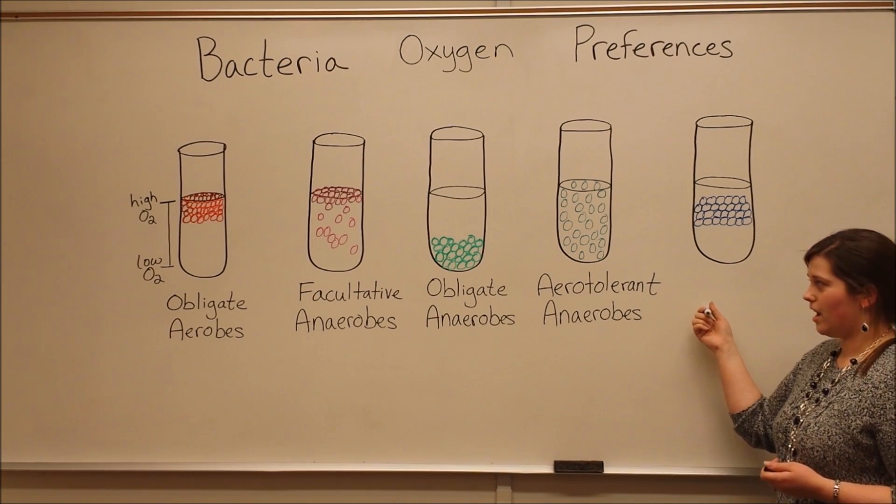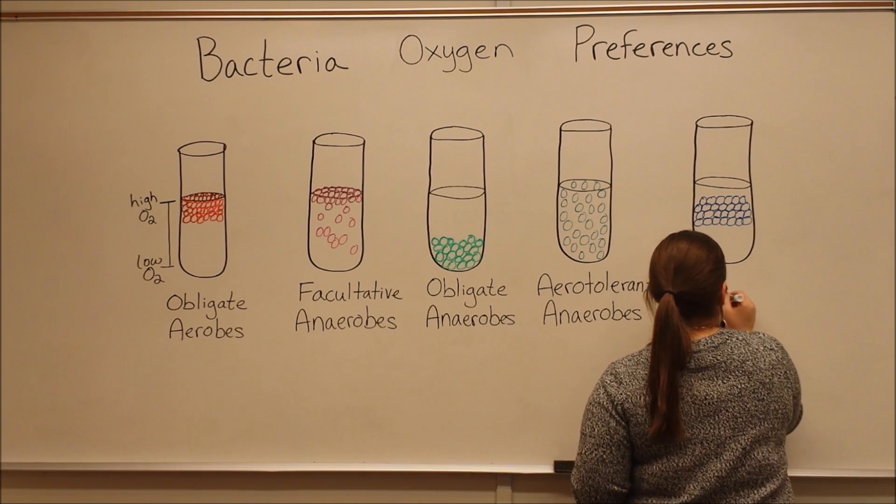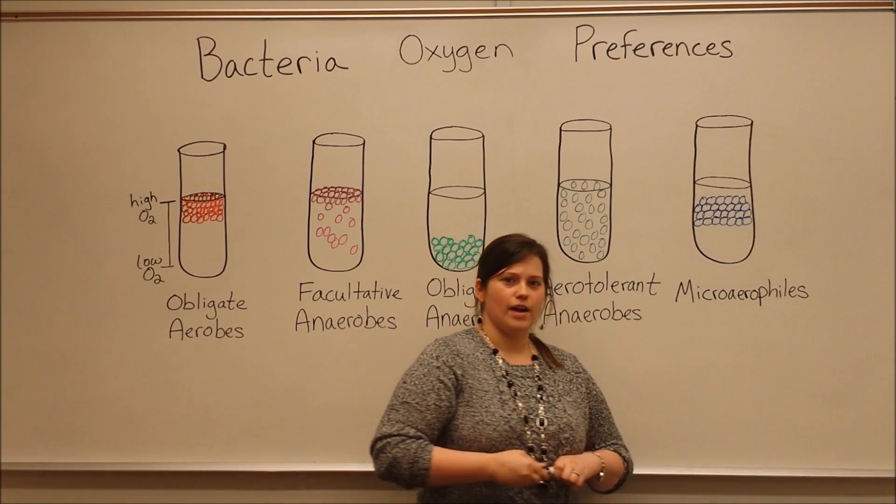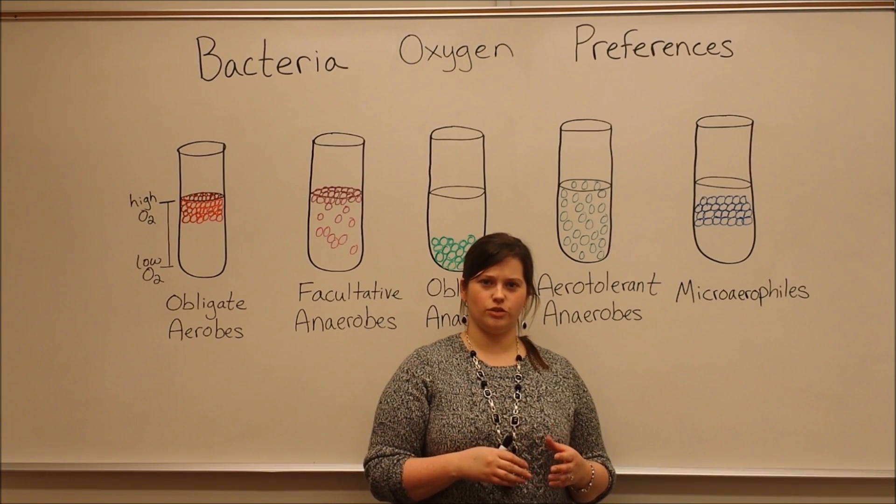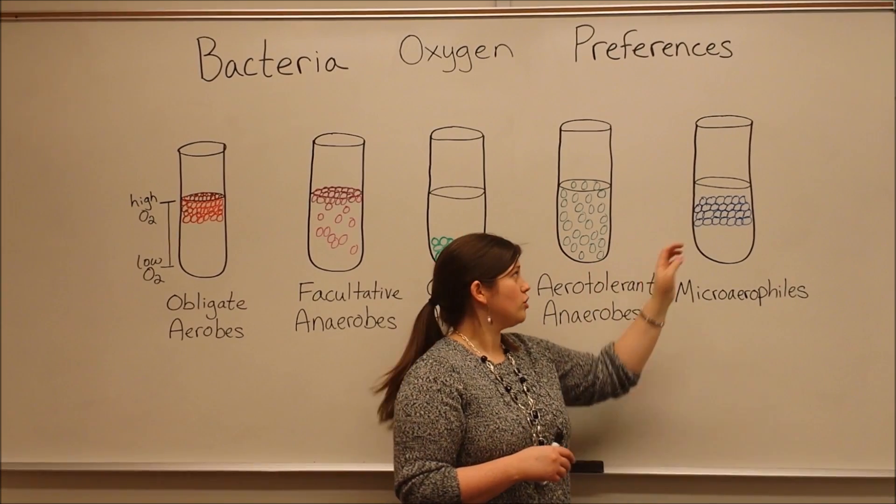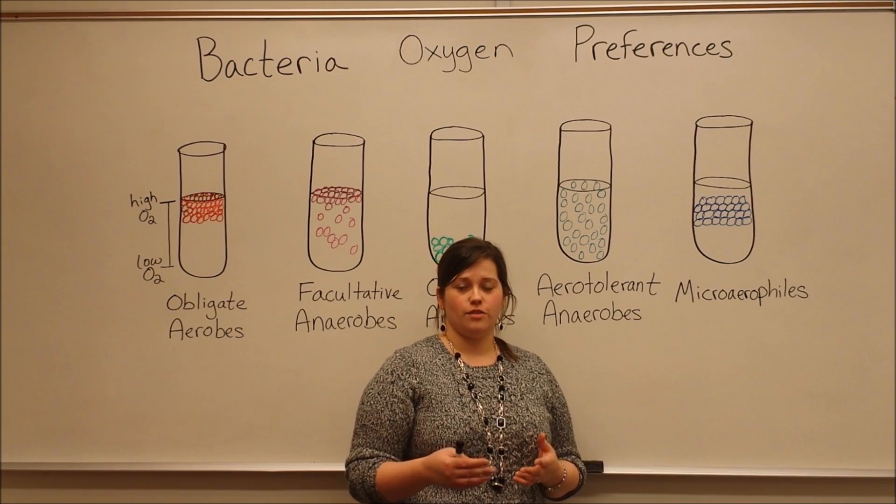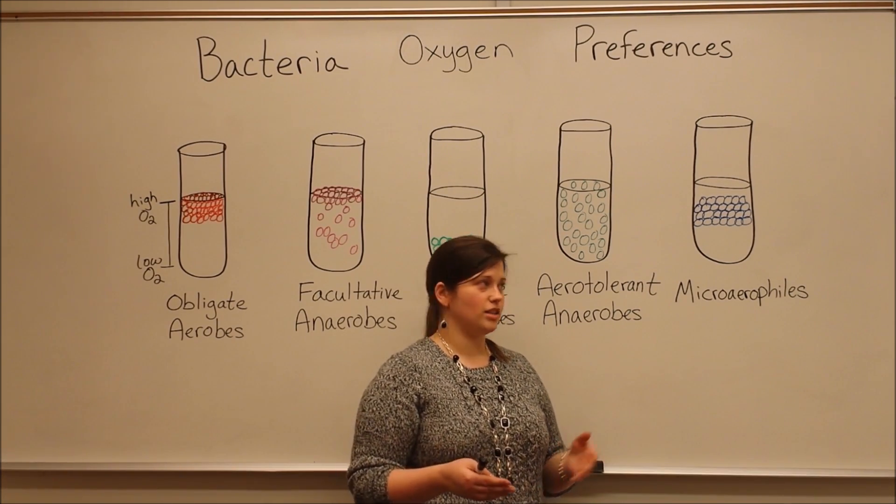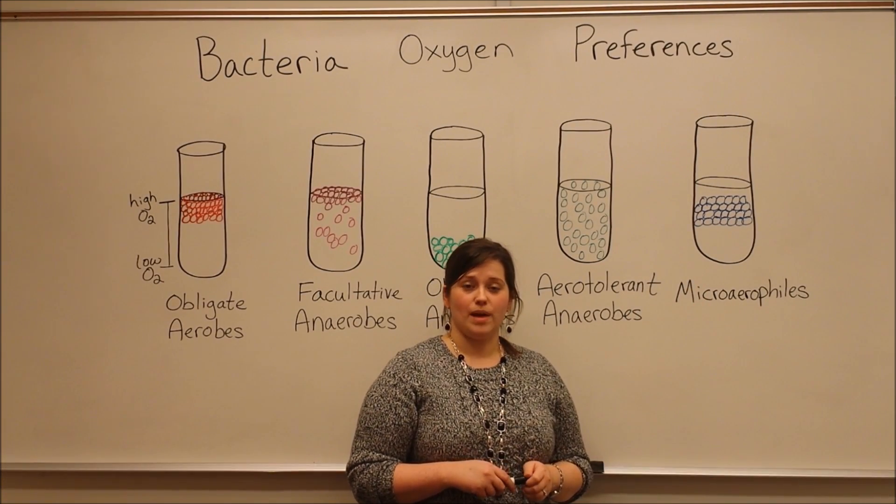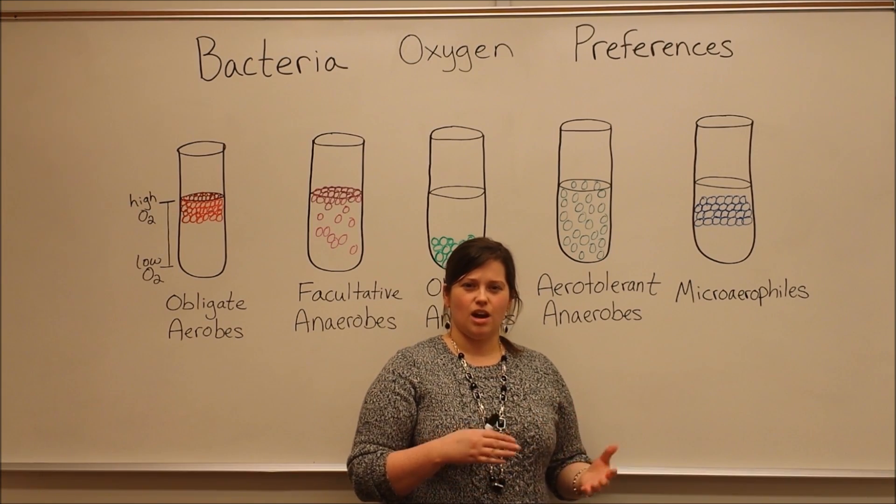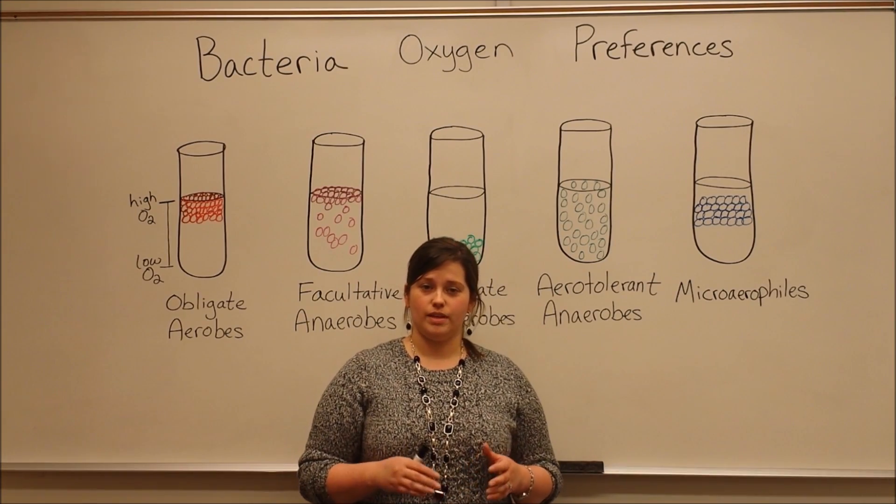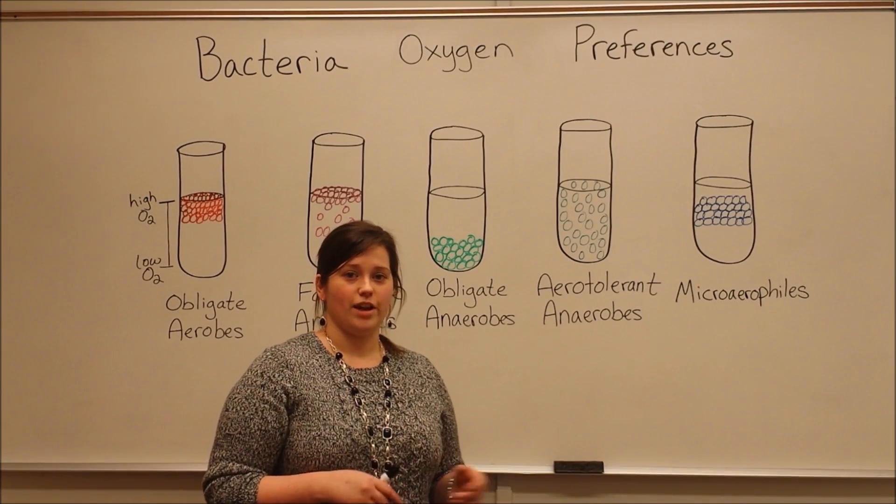Our final class of bacteria are called microaerophiles. Microaerophiles are interesting because they require oxygen, but they require it at a concentration that is less than atmospheric levels. That means that the oxygen that is here in the air at the top of the test tube and that's in the very top portion of the medium is too much oxygen for them to be able to survive. But they do require some oxygen, which is why they grow in this narrow band in the middle of the test tube. An example of a microaerophile is Campylobacter jejuni, which can be an opportunistic human pathogen, and it can be the cause of some food-borne illnesses. So those are the examples of five different classes of bacteria classified based on their oxygen preferences.